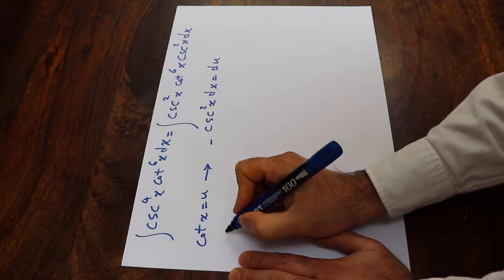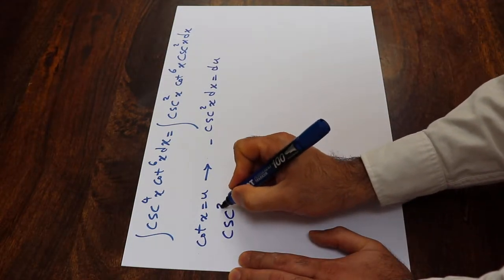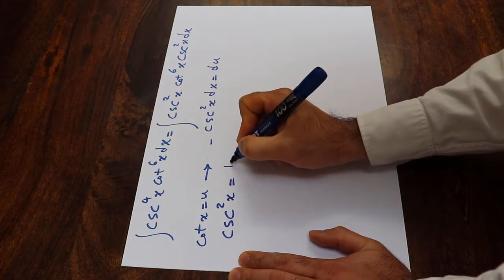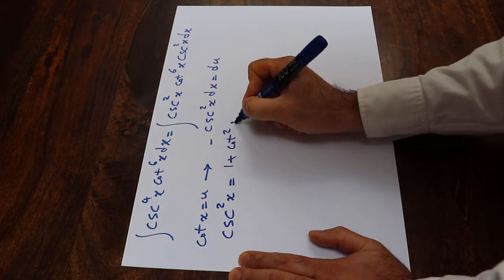Also from trigonometry, you should know that cosecant squared x equals 1 plus cotangent squared x.